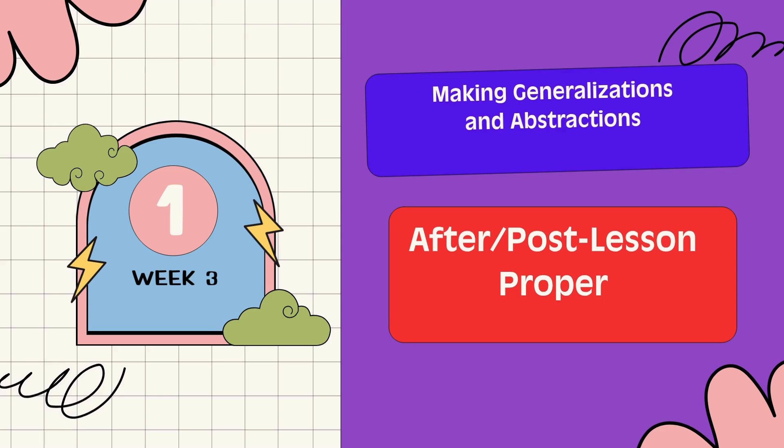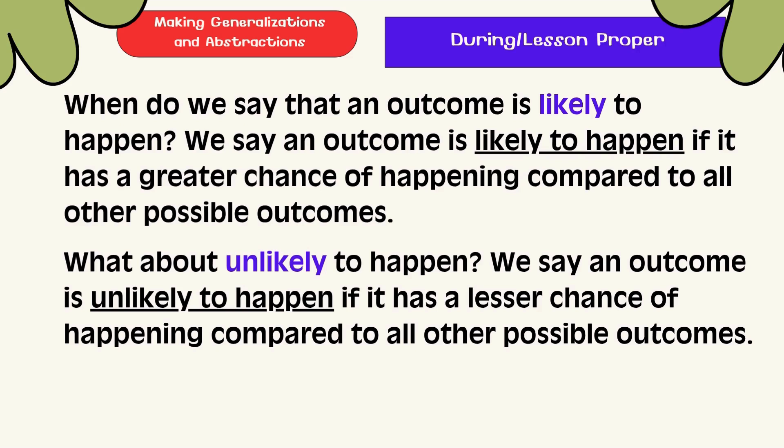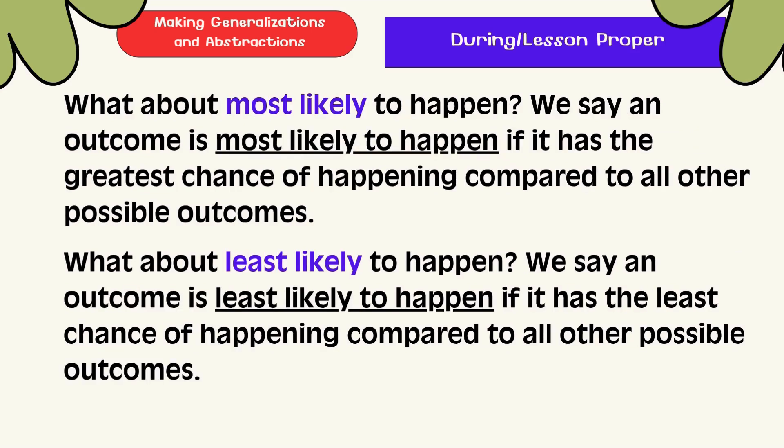Making generalization: When do we say that an outcome is likely to happen? We say an outcome is likely to happen if it has a greater chance of happening compared to all other possible outcomes. What about unlikely to happen? We say an outcome is unlikely to happen if it has a lesser chance of happening compared to all other possible outcomes. What about most likely to happen? We say an outcome is most likely to happen if it has the greatest chance of happening compared to all other possible outcomes. What about least likely to happen? We say an outcome is least likely to happen if it has the least chance of happening compared to all other possible outcomes.